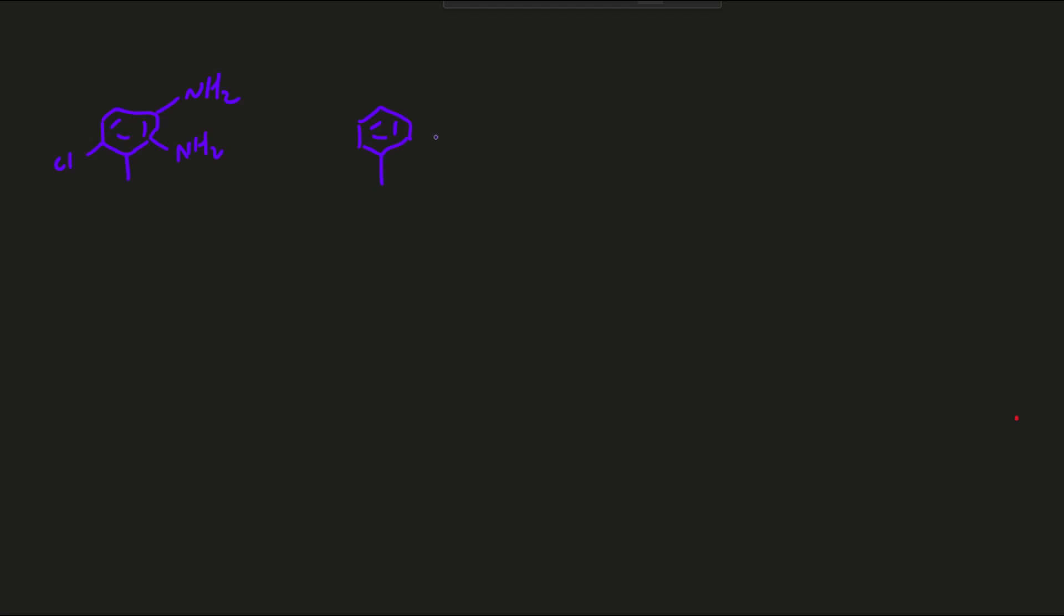and doing that in such a way that allows us to put everything else ortho to the methyl group. So, the way we do that is a sulfonation. So, if I use sulfuric acid, SO3, I'll get a sulfonic acid.